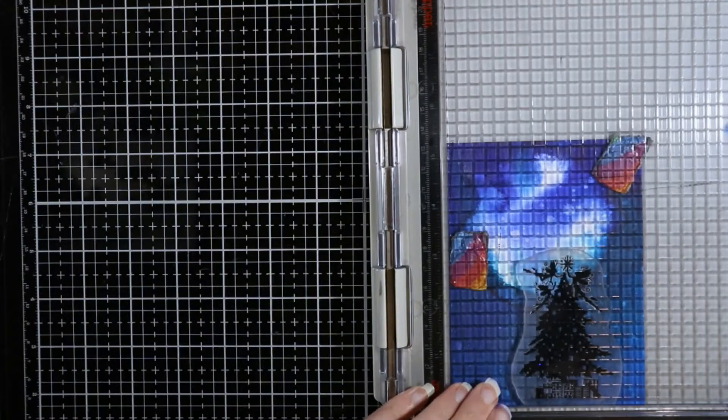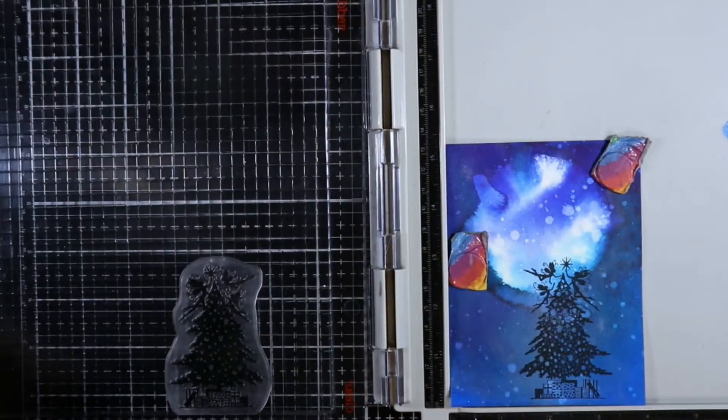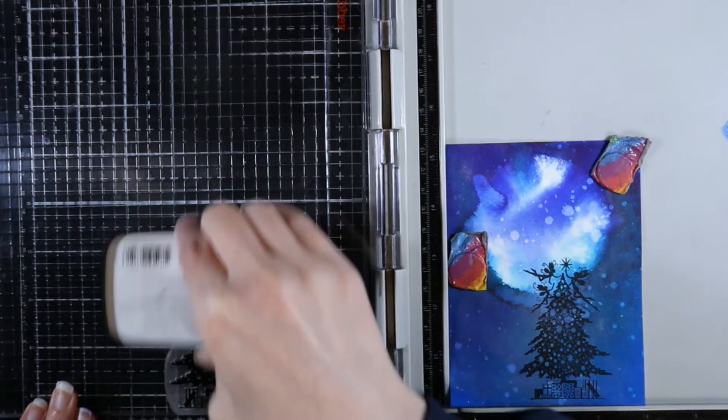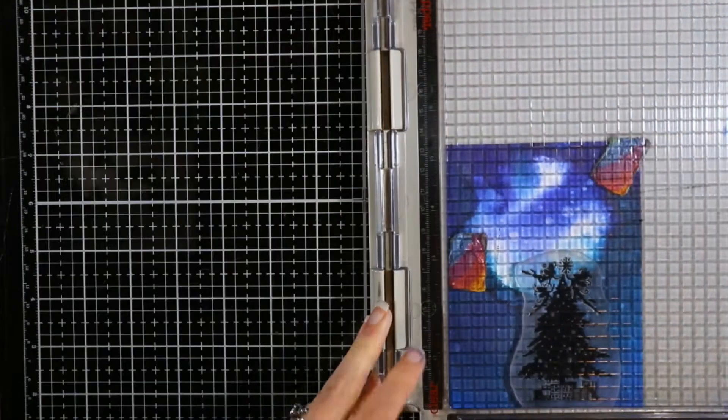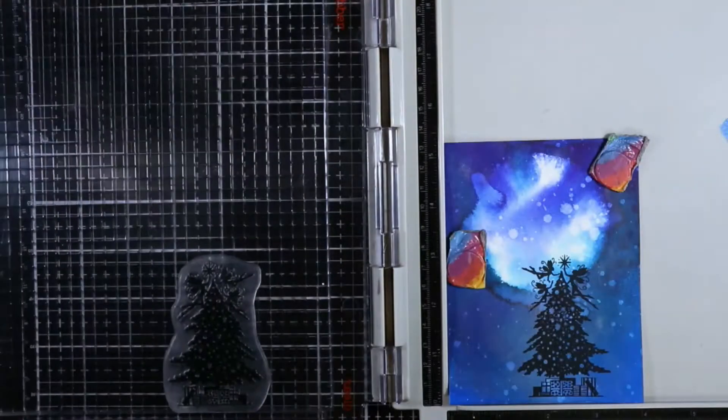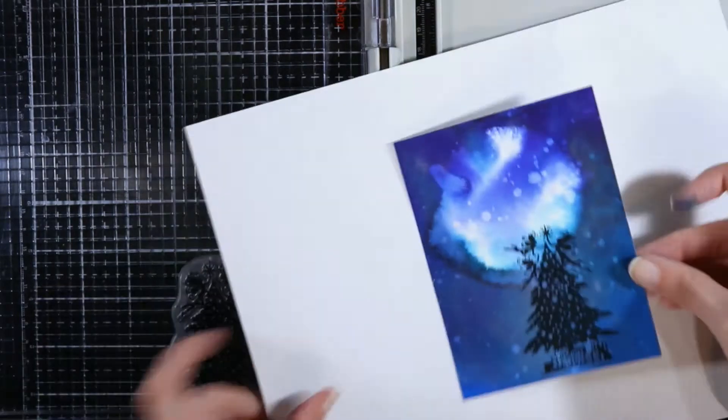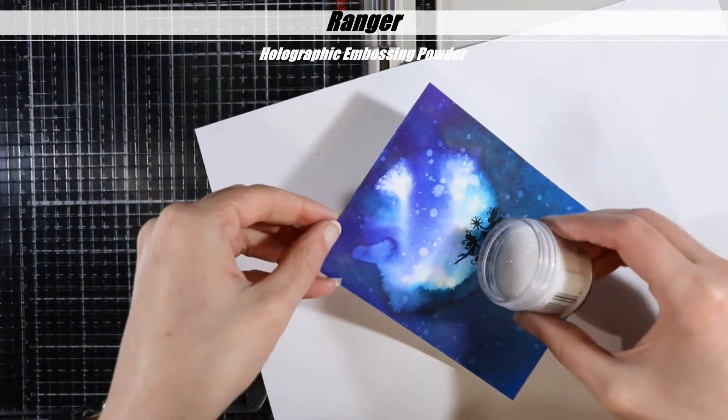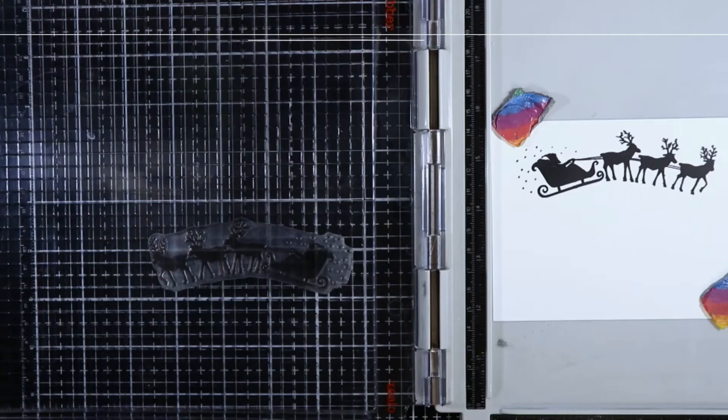I am inking this up with VersaFine Clair in Nocturne, not onyx—I don't know where I came up with that one. We're just going to stamp that real good, and then I'm going to cover it with the Ranger holographic embossing powder, because I think that everything should sparkle during Christmas time. This is my favorite embossing powder to use during Christmas time. Look how pretty that is—it looks even prettier when it's heat set.